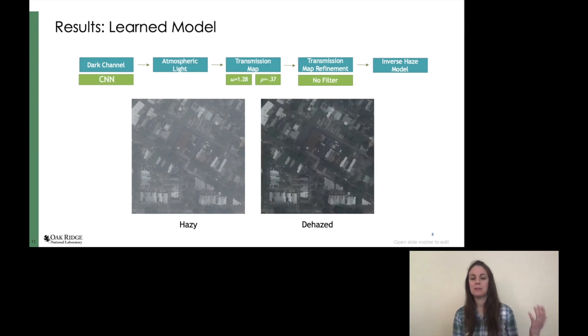And then after training, we were able to see that the image does look dehazed. It's interesting to note that the learned dark channel construction no longer requires the transmission map to be refined.